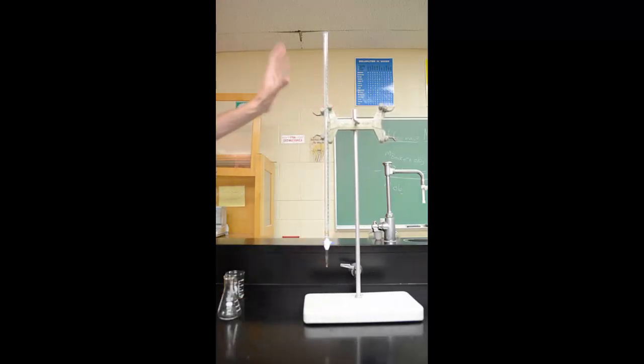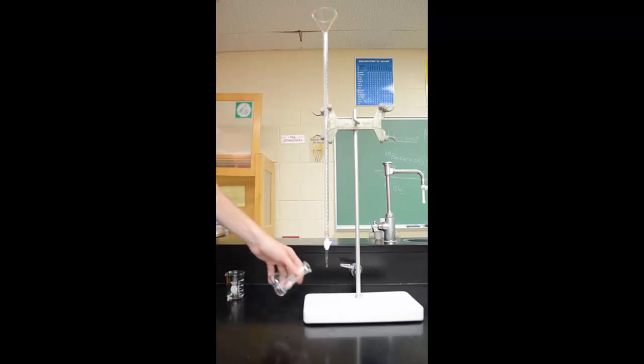Before we take any measurements at all, we're going to need two things. First, a funnel so we can put it in the top to fill it up. And second, a waste container, so anything that comes out doesn't get the base wet. It just goes right into the waste container.